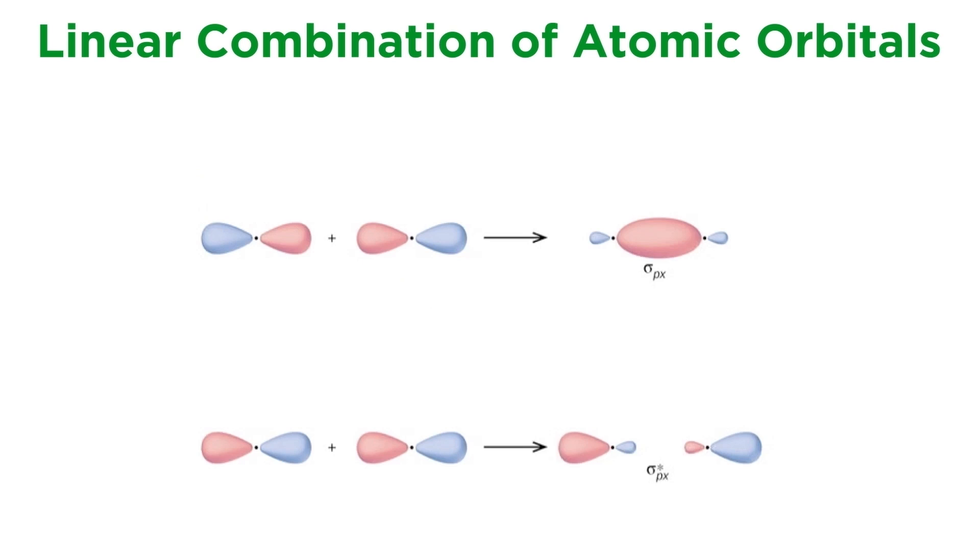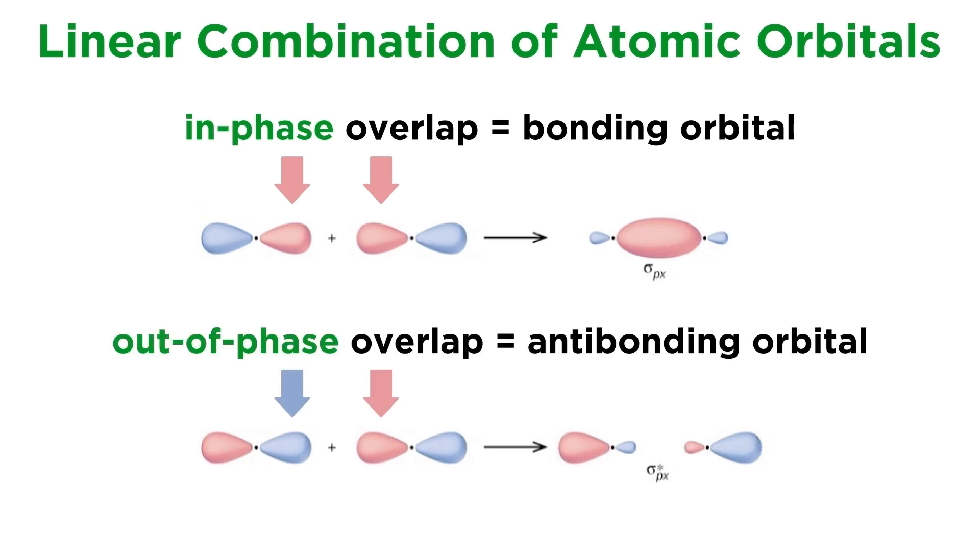Looking at p orbitals, each p orbital has two lobes with opposite phases. When lobes of the same phase overlap, which here are represented by the same color, we get constructive interference, which makes a larger region of probability density. When lobes of opposite phase overlap, it's destructive interference, and we get a node and an antibonding orbital.